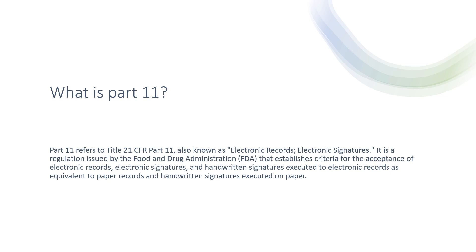Part 11 refers to Title 21 CFR Part 11, also known as Electronic Records and Electronic Signatures. It is a regulation issued by the FDA that establishes criteria for the acceptance of electronic records, electronic signatures, and handwritten signatures executed to electronic records as equivalent to paper records and handwritten signatures executed on paper. For example, if you are using records in electronic format instead of hard paper, and signing electronically instead of manually with a pen, then Part 11 regulations shall be applied.